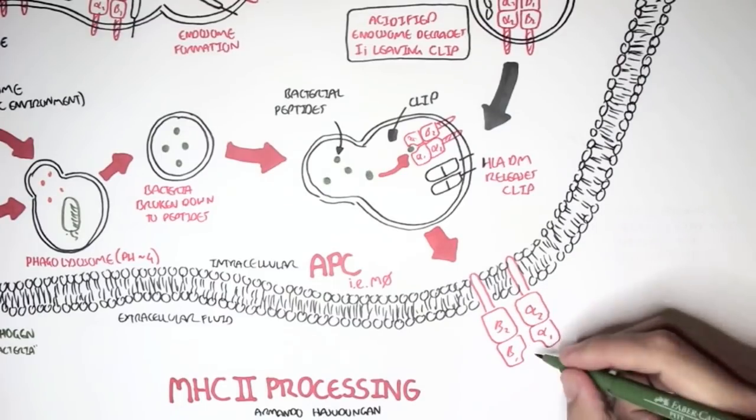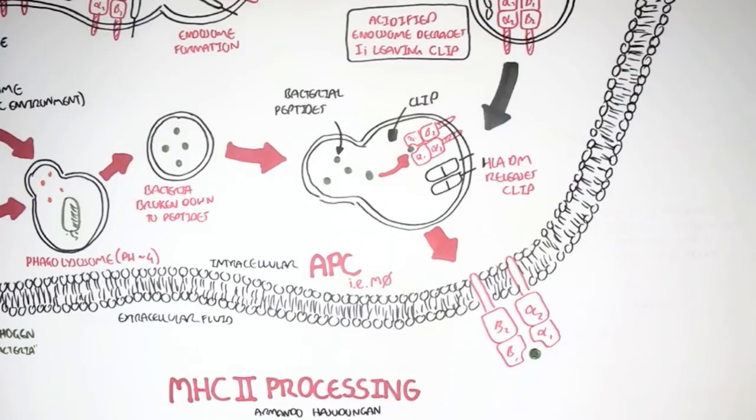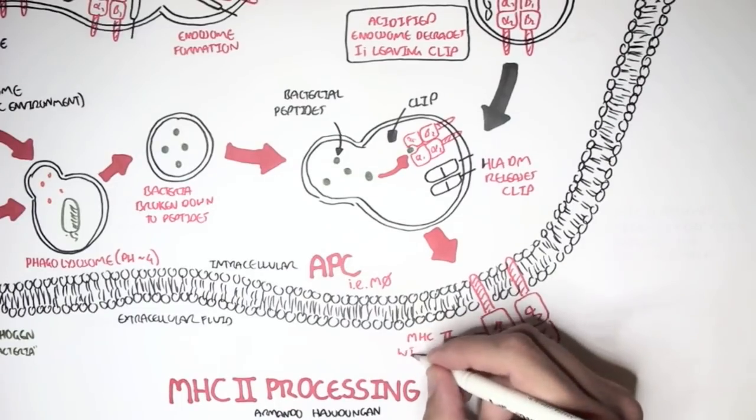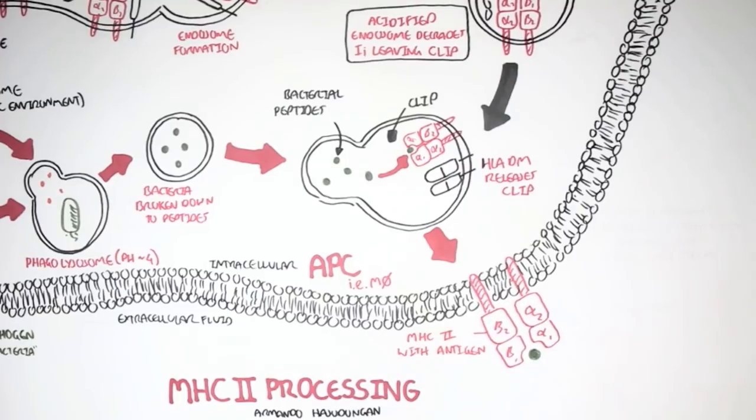The MHC class II is expressed and will wait for interaction with a naive CD4 T cell. The naive CD4 T cell is MHC class II restricted, which means that it requires interaction with an MHC class II molecule to become activated.